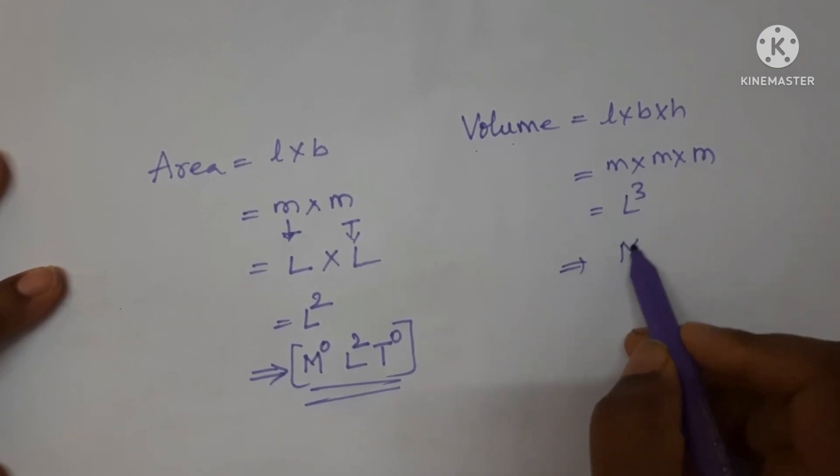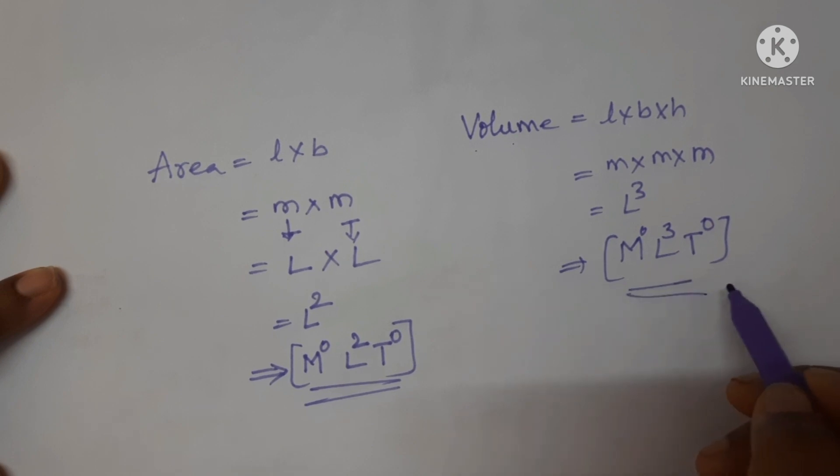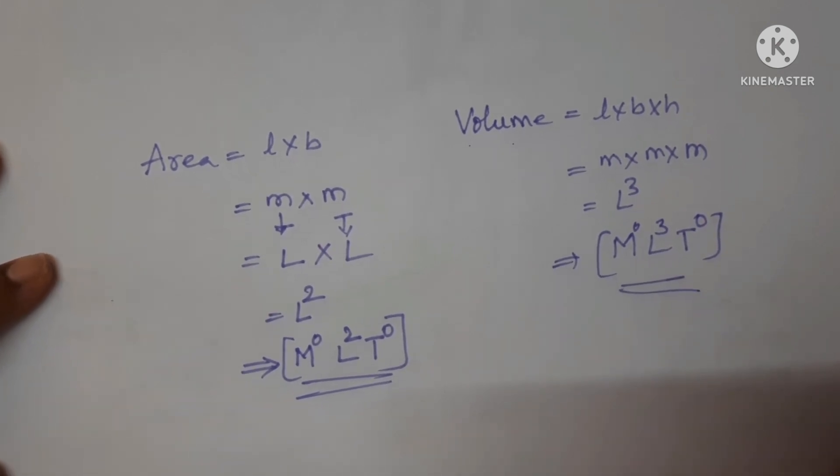Now, write the dimensional formula in M, L and T format. Here, mass term is absent, length term is L cube and time term is absent, so T power 0. This is the dimensional formula for volume.